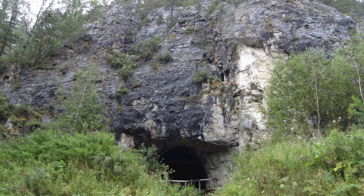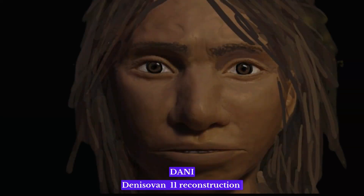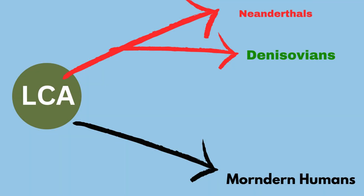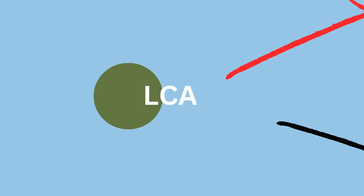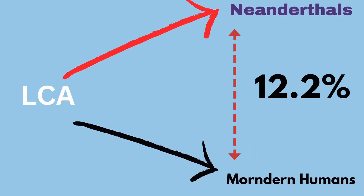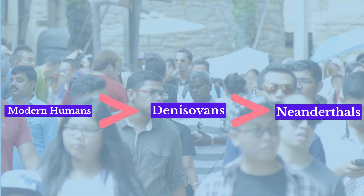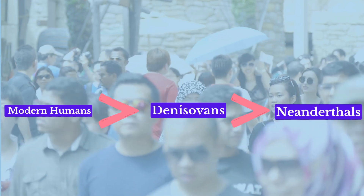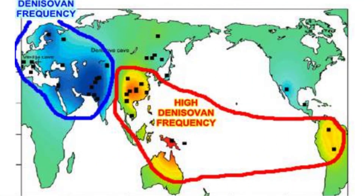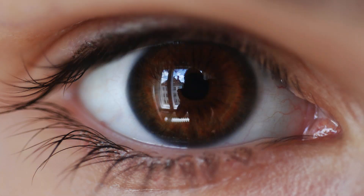The Altai region, where Denisova Cave is located, was occupied by Neanderthals, Denisovans, and modern humans, although the precise timing and coexistence of these groups remain uncertain. The Denisova 11 girl represents an example of hybridization, with a Neanderthal mother and a Denisovan father. The study of ancient DNA has revealed significant genetic differences: Denisovan genomes differ from the standard human genome by 11.7 percent, while the difference between Neanderthals and modern humans is 12.2 percent. Denisovans carry genetic traits associated with dark skin, brown hair, and brown eyes, which are also present in modern humans.